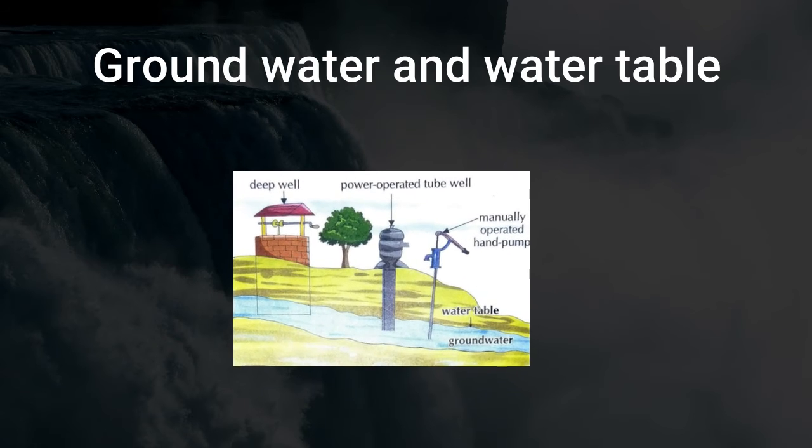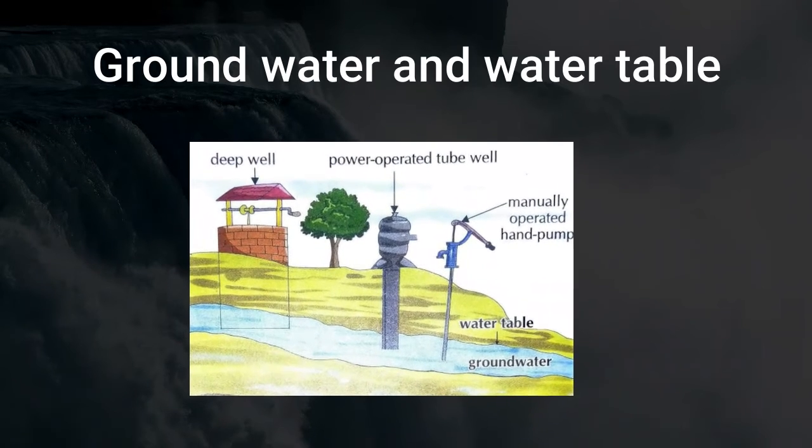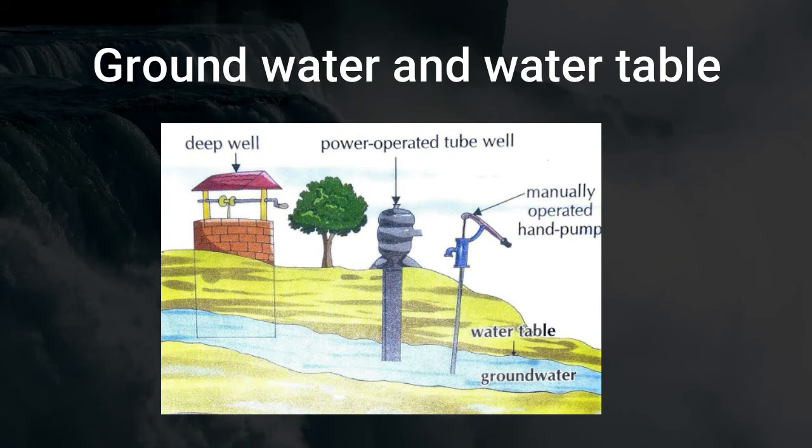Now next topic is groundwater. The water present below the surface of the earth is called groundwater. And groundwater can be pumped out by a well, tube well or a hand pump.